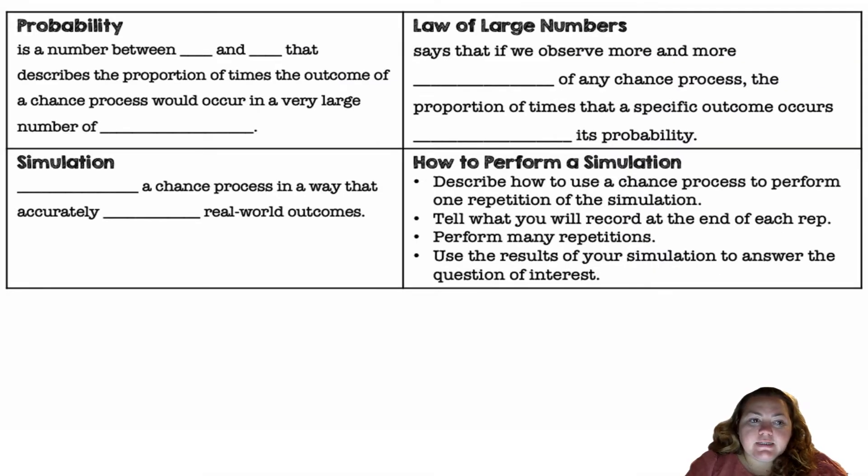Probability is a number between 0 and 1 that describes the proportion of times the outcome of a chance process would occur in a very large number of repetitions. The law of large numbers says that if we observe more and more repetitions of any chance process, the proportion of times that a specific outcome occurs approaches its probability.